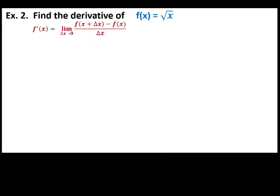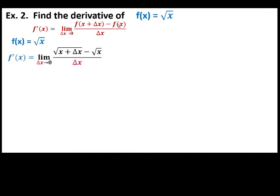Next example: find the derivative of f of x equals square root of x. Starting with the definition of the derivative, we replace x with x plus delta x. This x is replaced with x plus delta x minus the original function, f of x, all over delta x.